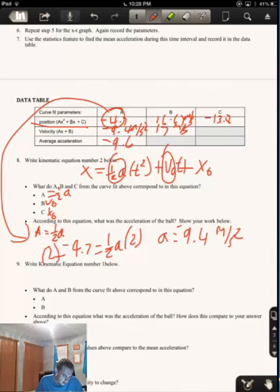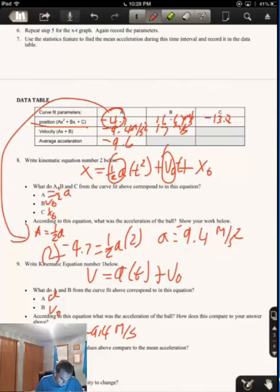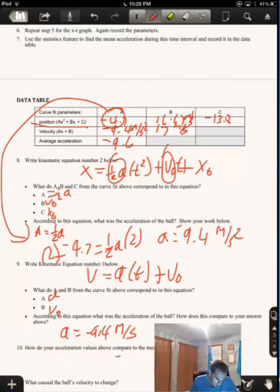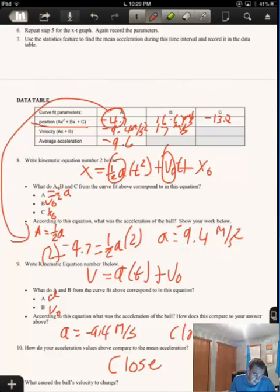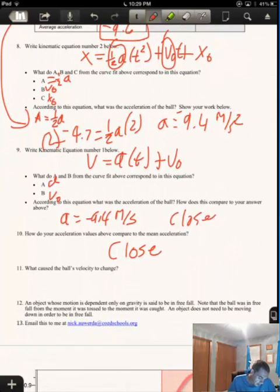Kinematic equation number 1, final velocity equals acceleration times time plus V naught. That means A corresponds to acceleration, and B corresponds to initial velocity. And if we take a look, the acceleration of the ball, according to that, is negative 9.4 meters per second. And the initial velocity was 17, and that one had 16. So these are all close. The acceleration according to the position time graph is about negative 9.2, or 9.4. The acceleration according to the velocity time graph is about negative 9.4. And the average acceleration over the time interval was about negative 9.6.